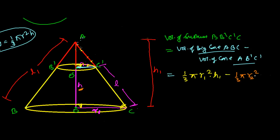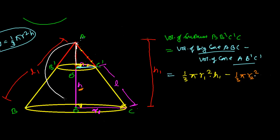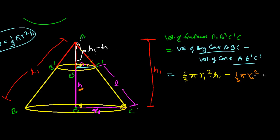The height of the small cone — looking at the figure, the complete height is h1 and the frustum height is h, so the small cone's height is h1 minus h. Therefore the volume of the frustum is (1/3)πr1²·h1 minus (1/3)πr2²·(h1 − h).